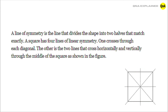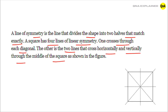Let's see once again. A line of symmetry is the line that divides the shape into two halves that match exactly. A square has four lines of symmetry. One crosses through each diagonal. The other two lines cross horizontally and vertically through the middle of the square, as shown in the figure.